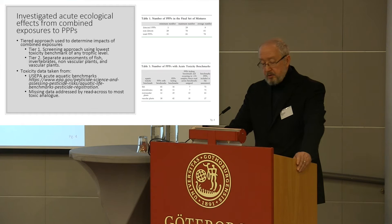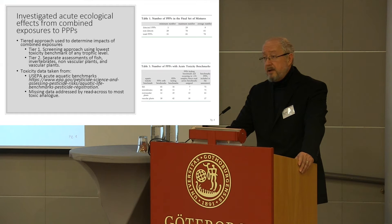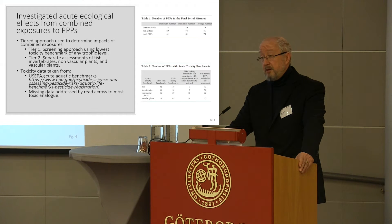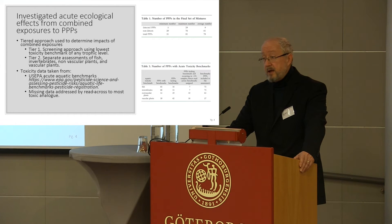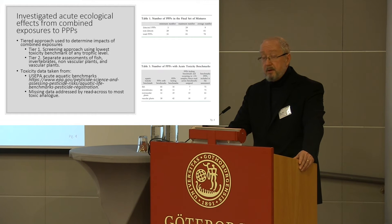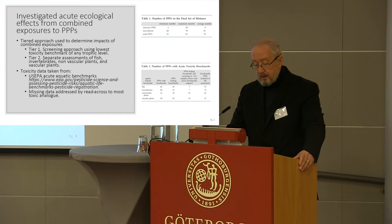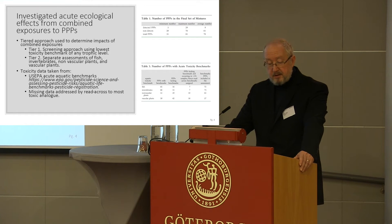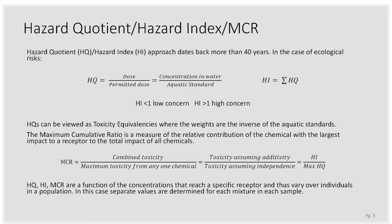Where we did not have data, we used a read-across approach. If it was a herbicide of a particular class, like a triazine, we picked the most toxic triazine we could find. If it was an insecticide and it was organophosphorus, we used the most toxic organophosphorus. If it was a one-off without a category, we picked the most toxic insecticide or the most toxic herbicide to fill in the missing values. I recommend reading the paper where it's nicely documented.